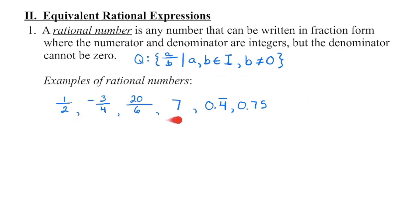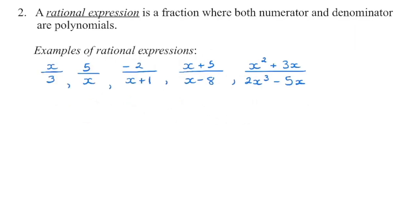All of these numbers are considered rational numbers. We can write this as a fraction 7 over 1, 0.4 repeating is 4 over 9, and we know 75 hundredths can be reduced to 3 over 4.